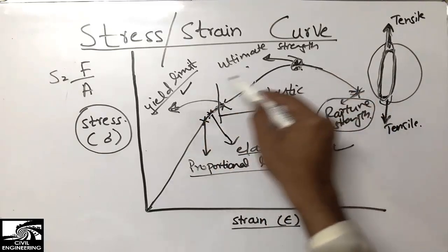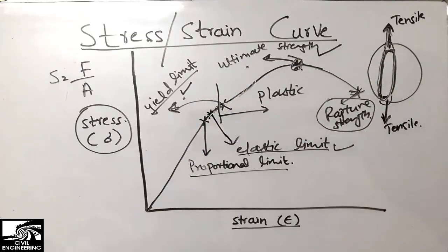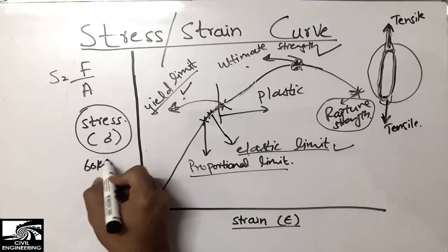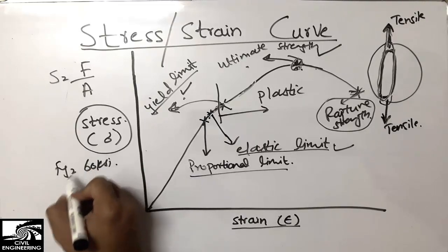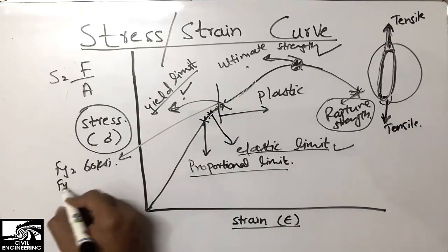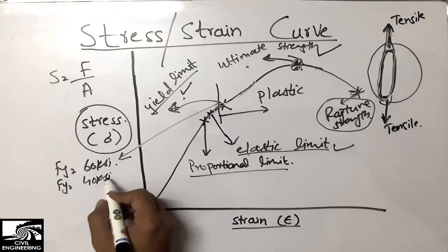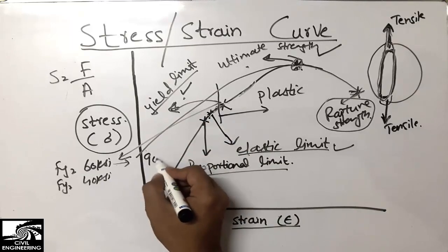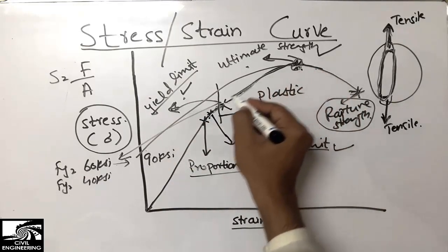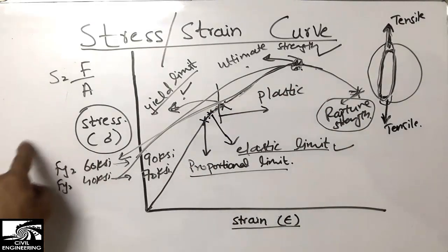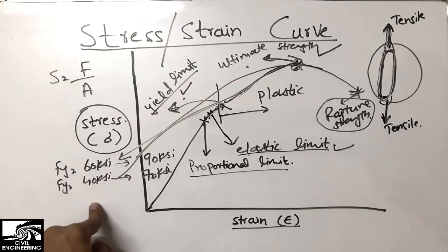These are really important properties. We mostly deal with the yield limit and the ultimate strength. For example, Grade 60 steel has a yield strength of 60 ksi and an ultimate strength of 90 ksi, while Grade 40 steel has a yield strength of 40 ksi and an ultimate strength of about 70 ksi.